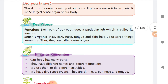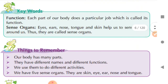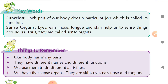Now, keywords — words which are new to you. Function: each part of our body does a particular job which is called its function. Function ka matlab hota hai koi kaam — humari body ka har part ek khas kaam karta hai jo uska function kehlata hai. And sense organs — eyes, ears, nose, tongue, and skin — they help us to sense things around us, that is why they are called sense organs. Sense ka matlab hota hai kisi cheez ko mehsoos karna.